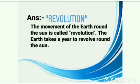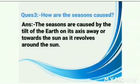The movement of the Earth round the sun is called revolution. The Earth takes one year to revolve round the sun. Question number three: How are the seasons caused? Answer: The seasons are caused by the tilt of the Earth on its axis, away or towards the sun, as it revolves around the sun.